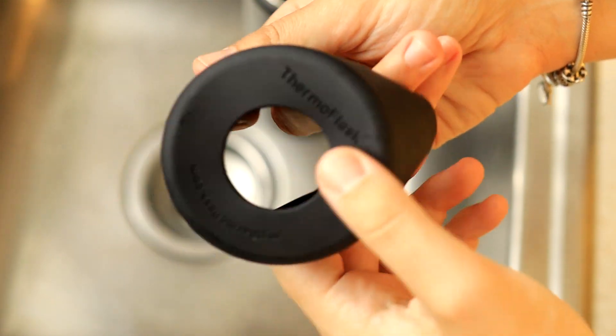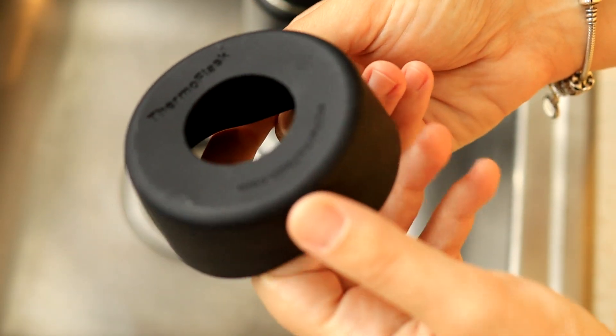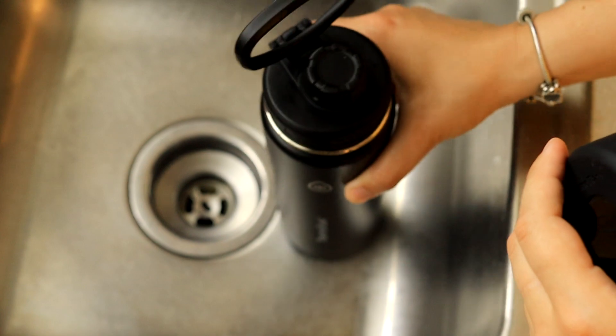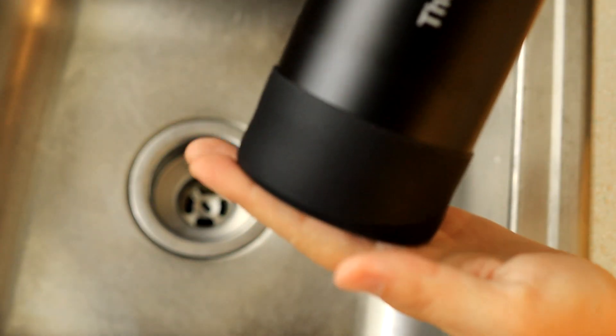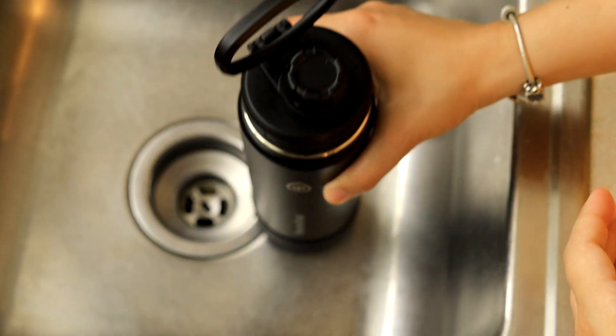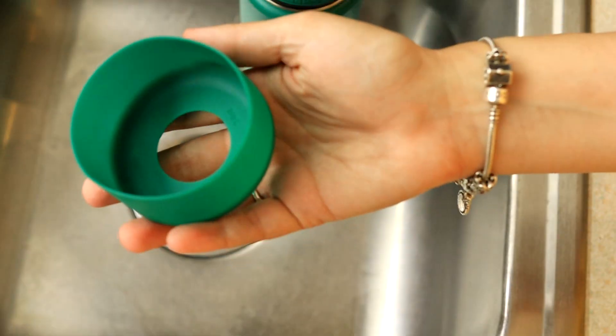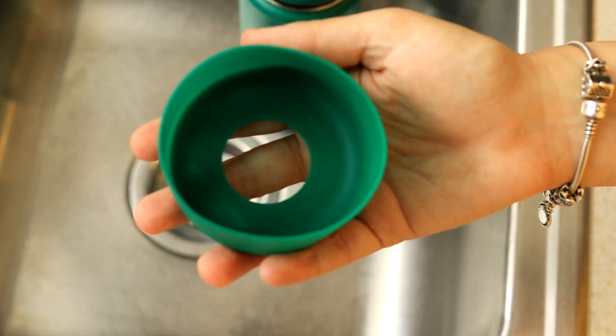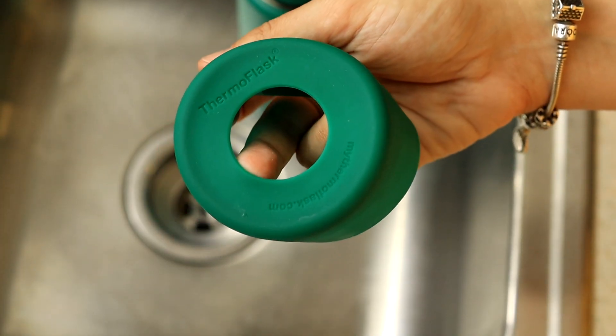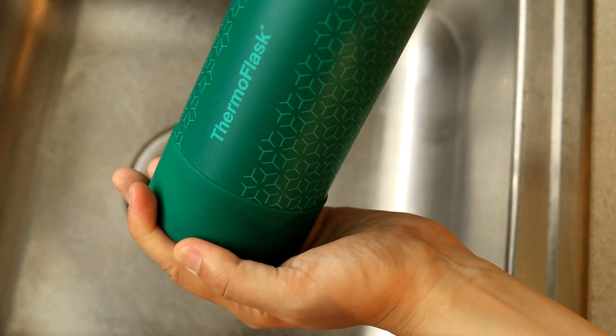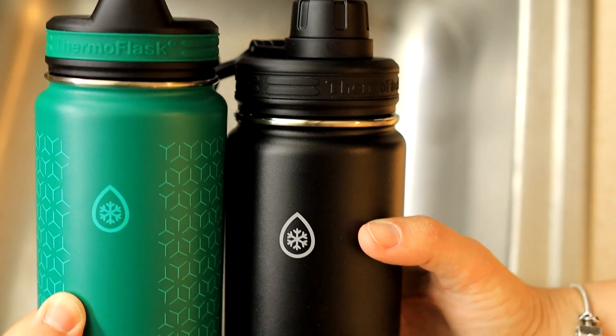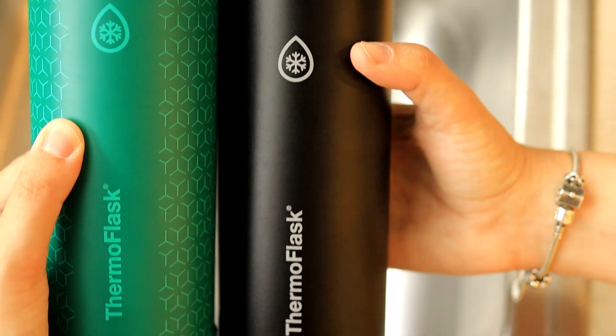Especially if you're going to be using this bottle at nighttime, without the rubber if you put it down you're going to hear it, but with this rubber put on it prevents you from hearing so much noise. Same thing for the green one, which is what it was bought for bedtime. Put your silicone on that way it doesn't make too much noise.